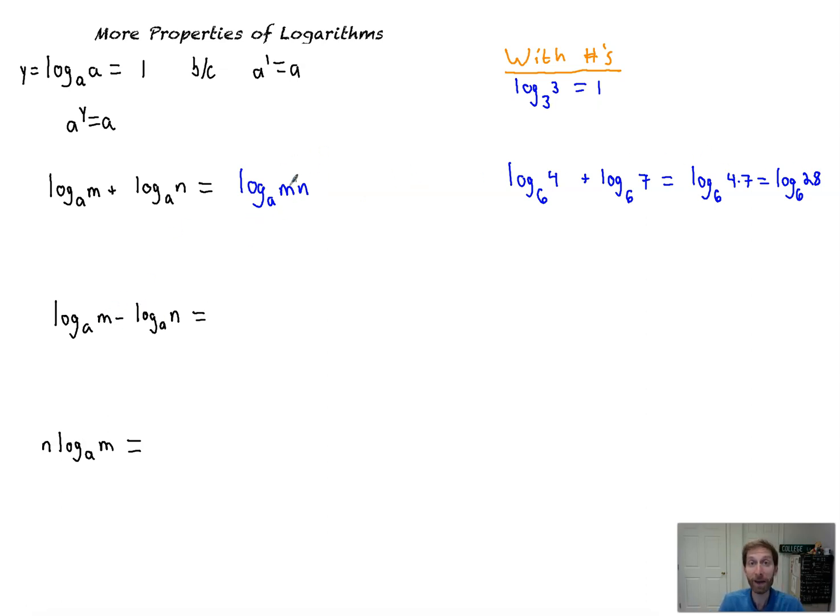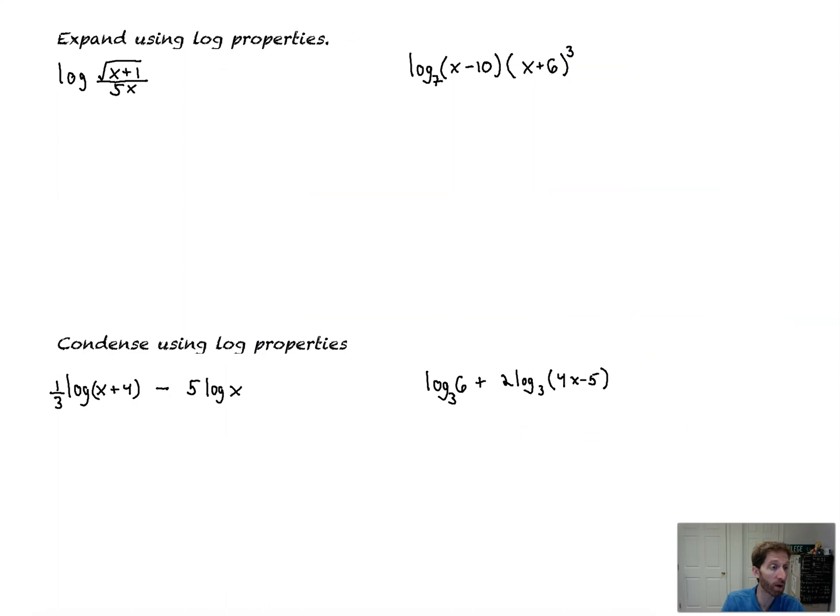What do we do when we subtract then? Well, the opposite of this, instead of multiplying, we would divide. Log base a of m over n. Not bad. With numbers, if we had like log 8 minus log 4, this would be log of 8 over 4, which is log of 2. So how about this one? When I have some value, a constant, times log a of m, that's equal to log m to the n. What does that look like with numbers? If I have 5 log base 4 of 2, that's the same as log base 4 of 2 to the 5th, which simplifies to log base 4 of 32. Not bad at all. So that's just knowing those properties.